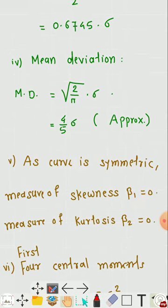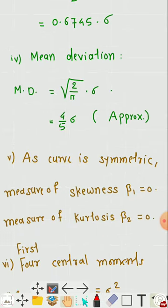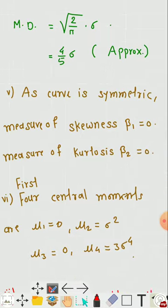The mean deviation is equal to √(2/π) × σ, which equals approximately 0.7979σ, or approximately (4/5)σ. This value is an approximate value.